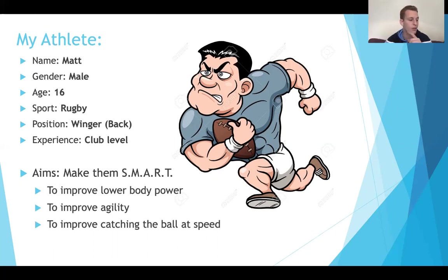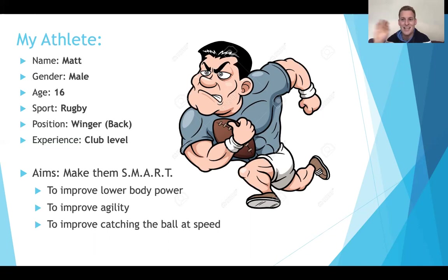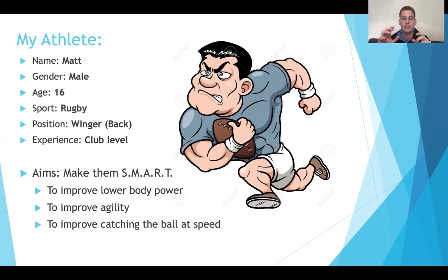When talking about SMART targets: they need to be Specific — specific to rugby, to his winger position; Measurable — through fitness testing and comparison to normative data; Achievable — not setting elite-level goals for a club-level athlete; Realistic — appropriate to his age and experience; and Time-bound — something he can improve within the six-week block.